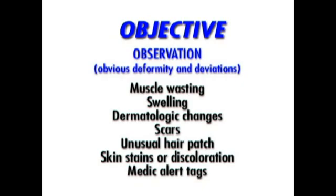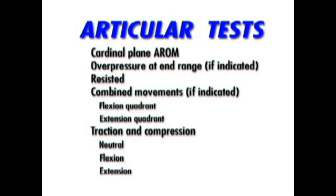I will now discuss each component's general principles. First, the articular structures are examined via Dr. James Cyriax's Selective Tissue Tension Test and concepts for differentiating inert versus contractile tissue lesion. The articular testing begins with cardinal plane active range of motion, followed by overpressure at end range, unless the severity and irritability of the patient's condition is such that passive overpressure as well as resisted range should be deferred. Cardinal plane mobility assessment allows you to determine a patient's willingness to move, their quality and quantity of range of motion, and if able, determine if inert or contractile tissues are involved.